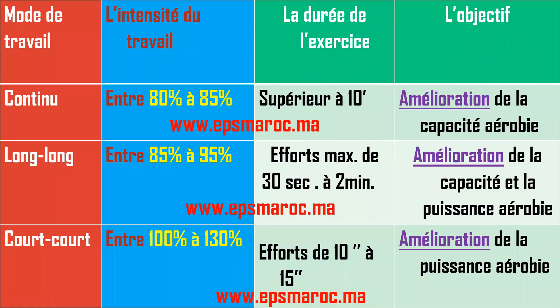Pour la première question, les caractéristiques des trois modes de travail : on a trois modes — continu, long-long, et court-court. Pour le mode de travail continu, l'intensité du travail est entre 80% et 85%, la durée de l'exercice est supérieure à 10 minutes. L'objectif, c'est l'amélioration de la capacité aérobique.